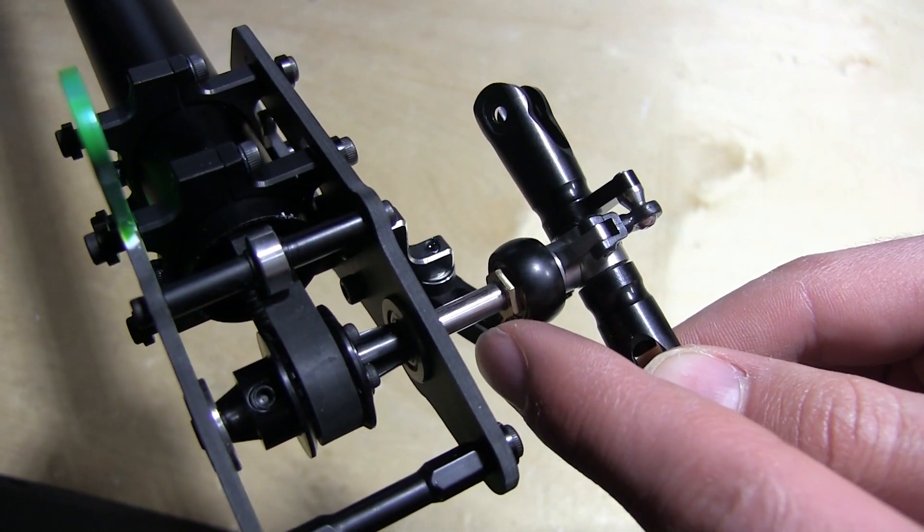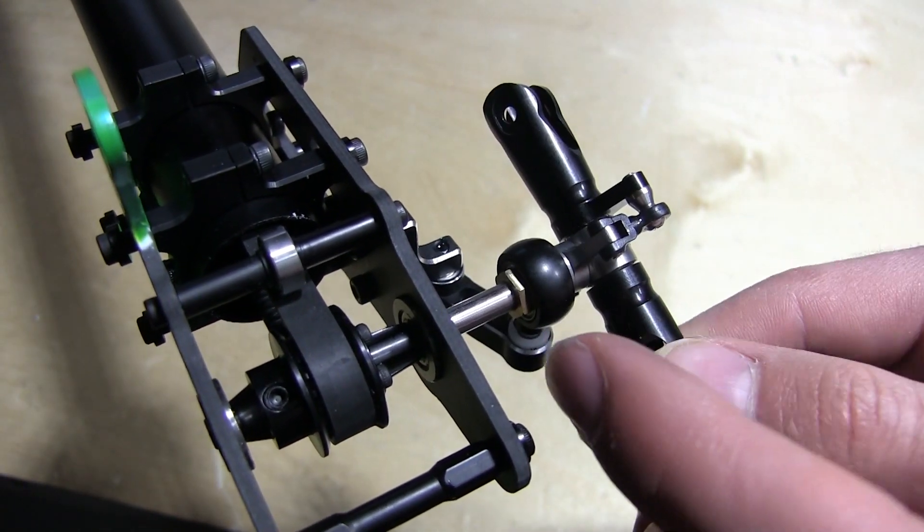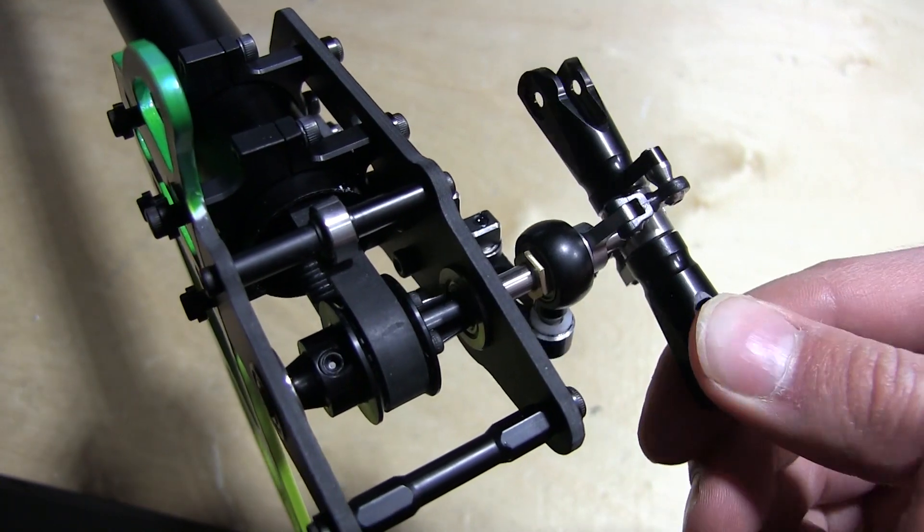Another thing to do is to put some tri-flow on this shaft. This is all just helping the tail servo, making sure it doesn't work as hard as it has to.